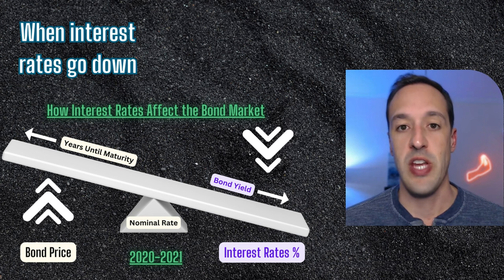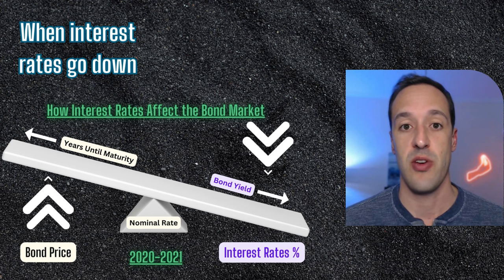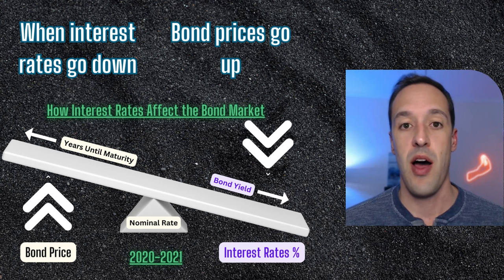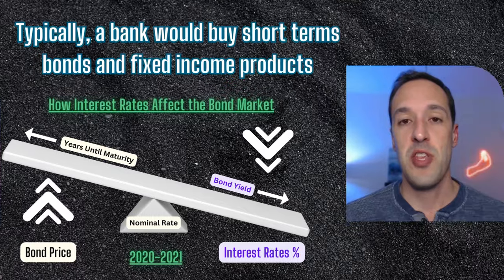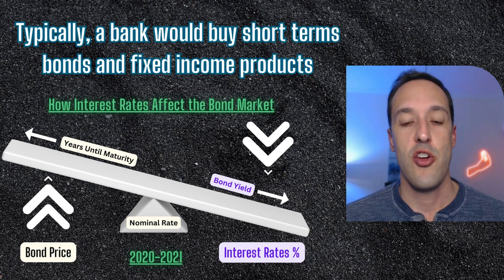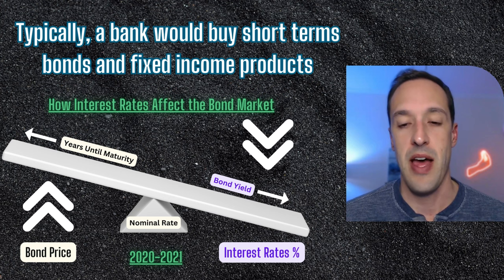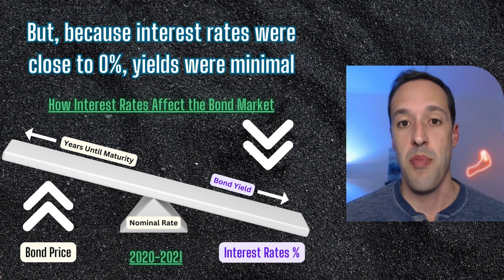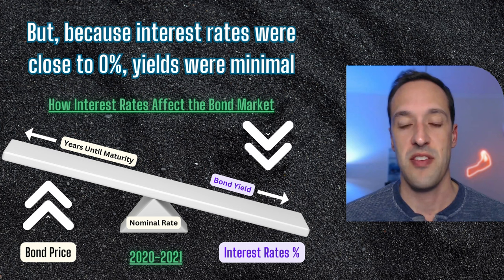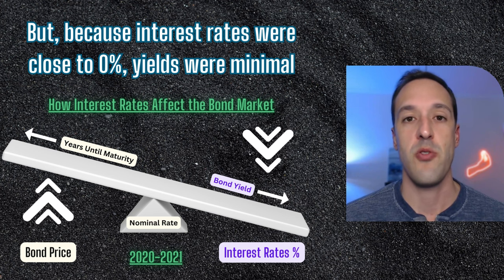There's a relationship between bond values and interest rates. When interest rates go down, like happened in 2020 and 2021, the Federal Reserve lowered interest rates down to zero, and bond prices went up. Typically with customer deposits, a bank would go out and buy very short term bonds — bonds that are going to mature within just a couple of years. But because interest rates were close to zero, bond yields, as you can see from this seesaw graph here, were minimal because interest rates were down.